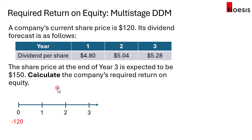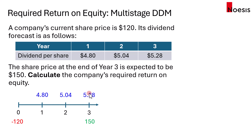Imagine today if you are the investor — if you pay $120 to buy this share, and if the forecast is correct, you would receive the 3 dividends up to year 3, and by the end of year 3 we expect to sell the share for $150. So based on this, the required return on equity would be the IRR, or the Internal Rate of Return, on the cash flows.